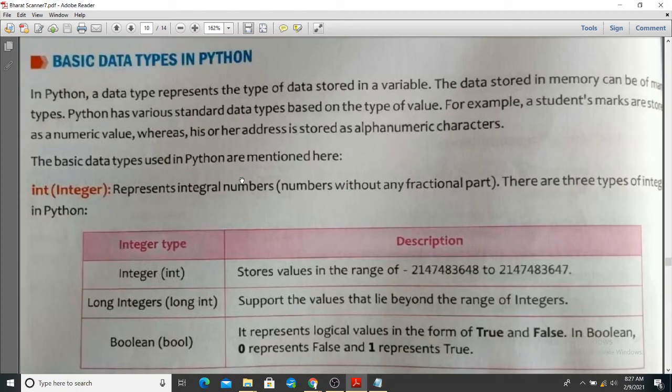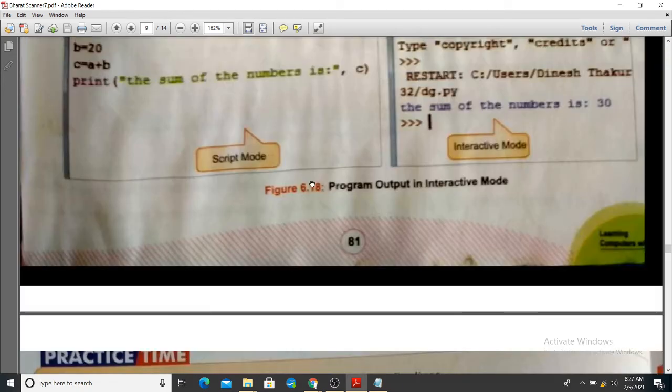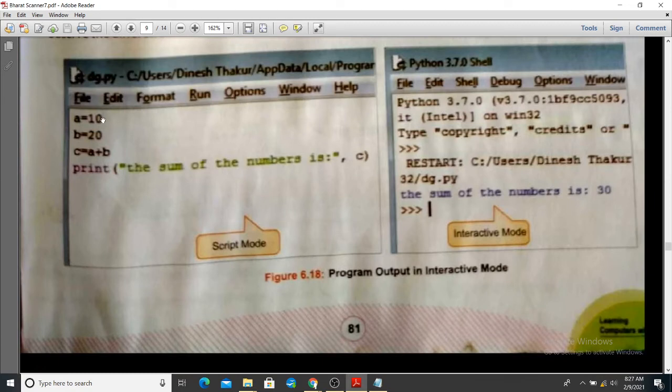You have to be aware that data types only represent what kind of value that particular value will store. Like we have made a variable here, A and B. So we haven't declared a data type here, but it will automatically take it.